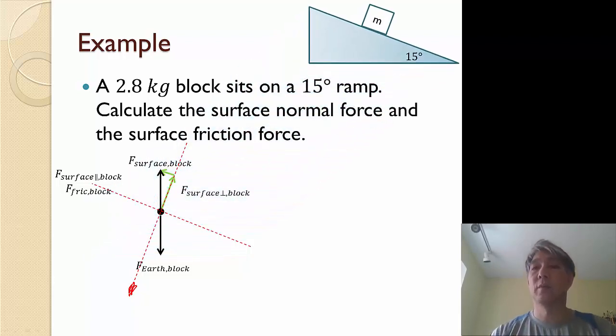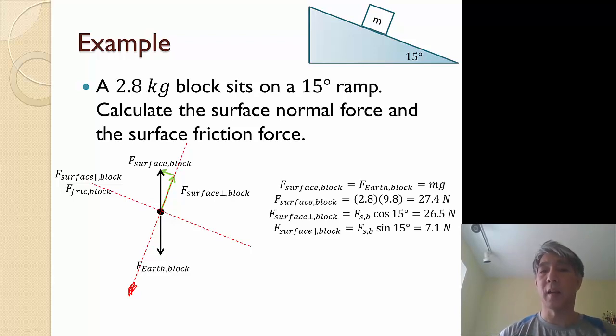Moving the ramp out of the way, I'm left with just this free body diagram. I can say that the force of the surface on the block, the up force, is going to equal the force of the earth on the block, the down force, because it's in equilibrium. That's basically mg, or the force of the surface on the block has a magnitude of 27.4 Newtons.